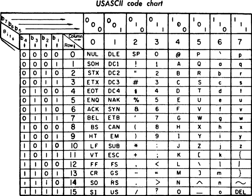Lowercase letters were therefore not interleaved with uppercase. To keep options available for lowercase letters and other graphics, the special and numeric codes were arranged before the letters, and the letter A was placed in position 41 hex to match the draft of the corresponding British standard. The digits 0 to 9 are prefixed with 011, but the remaining 4 bits correspond to their respective values in binary, making conversion with binary coded decimal straightforward.